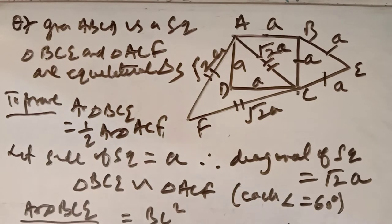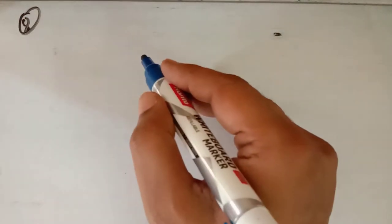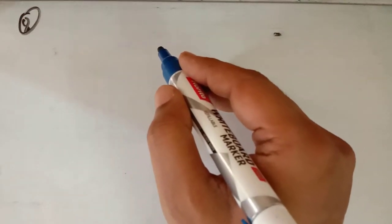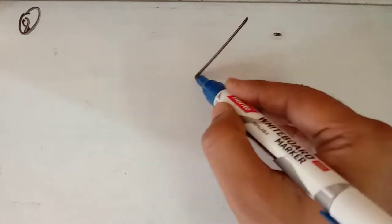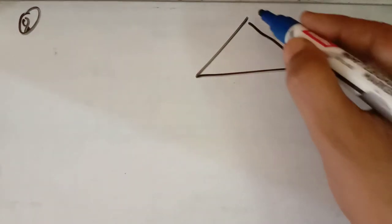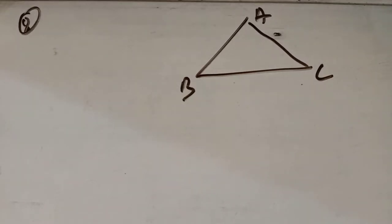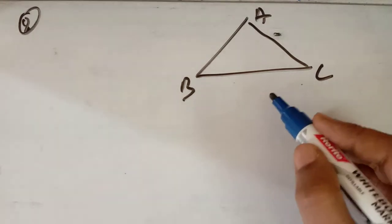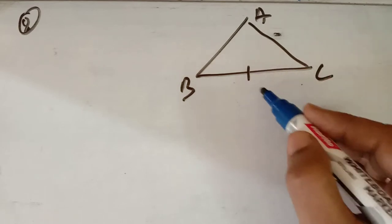Now in question number 8: ABC and BDE are two equilateral triangles such that D is the midpoint of BC. Given triangle ABC and triangle BDE are equilateral triangles where D is the midpoint of BC.